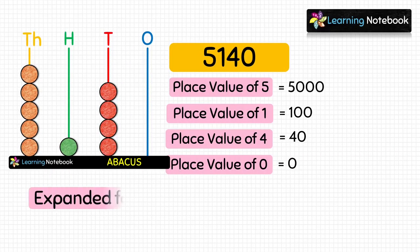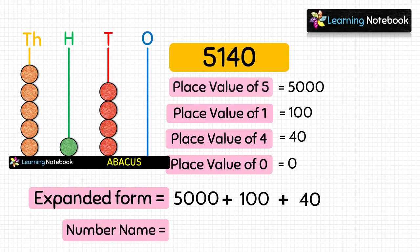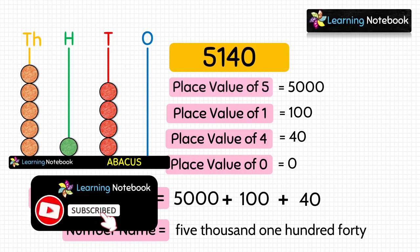Now we have the place value of all digits of this number. The expanded form is 5000 + 100 + 40 + 0, or we can write it as 5000 + 100 + 40. The number name is five thousand one hundred forty.